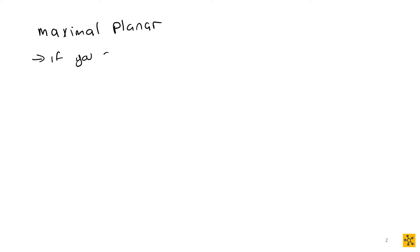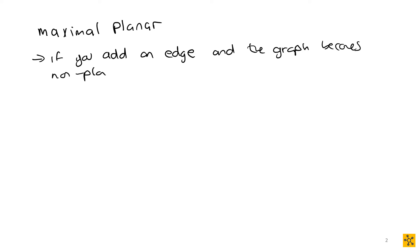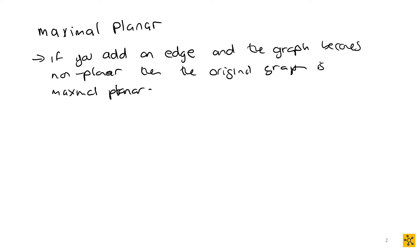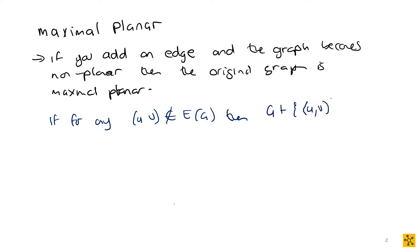So if you add an edge and the graph becomes non-planar, then the original graph is maximal planar. In mathematical terms: for any edge uv not an element of the edge set, G plus uv becomes non-planar.